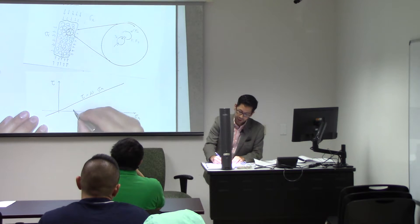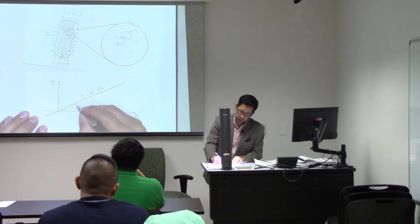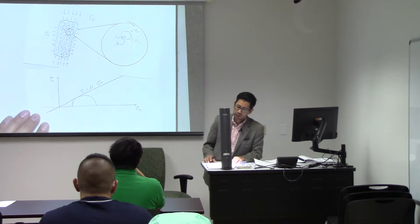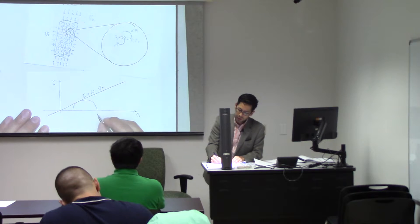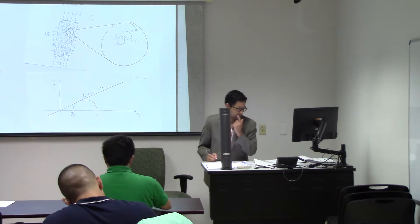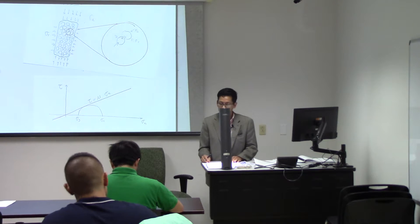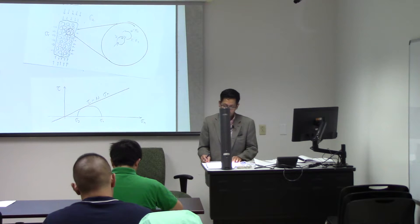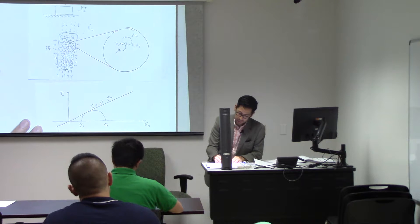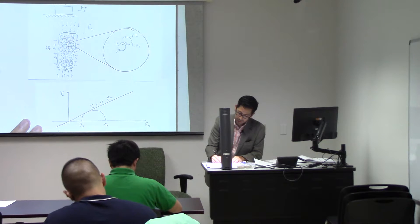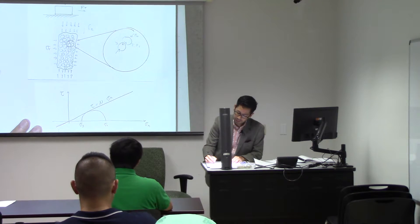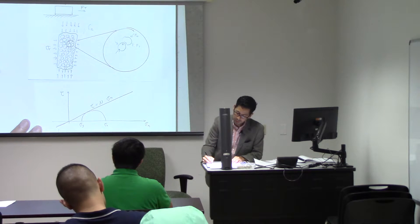The state of stress at failure — if I draw a Mohr circle — is going to be something like this, where this is going to be the maximum principal stress and this is going to be the minimum principal stress. So this will be the shear strength of uncemented sediments.